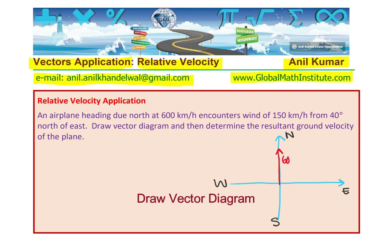So, represent this length of the vector as 6 units and the direction north. That is your 600 kilometers per hour. You get the idea. So, this says 600, unit being kilometers per hour. Now, the next statement is encounters wind of 150 kilometers per hour from 40 degrees north of east.